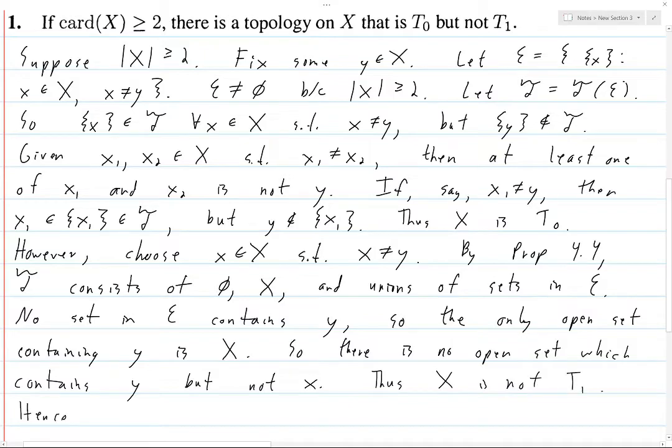So there is no open set which contains y but not x. Hence there exists a topology on X which is T0 but not T1.